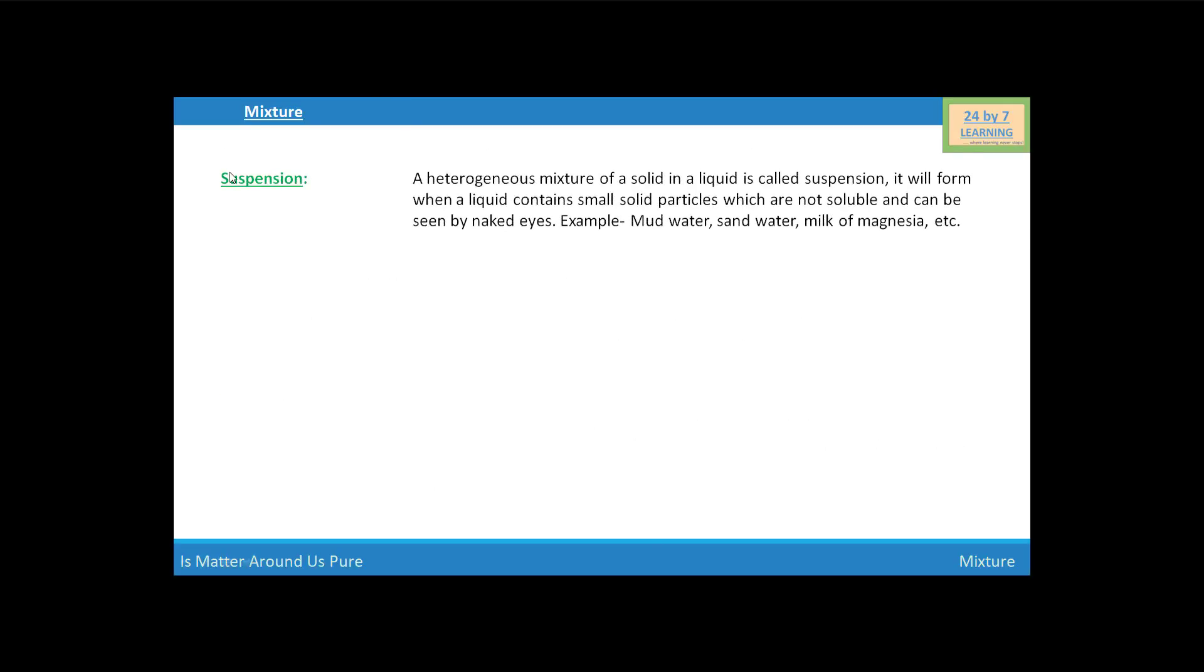Next, we are going to discuss about the suspension. What is suspension? A heterogeneous mixture of a solid in a liquid is called suspension. It will form when a liquid contains small solid particles which are not soluble and can be seen by naked eyes. For example, mud water, sand water, milk of magnesia, etc. These are the examples of suspension.